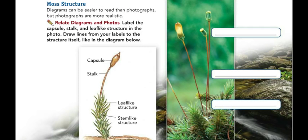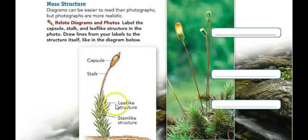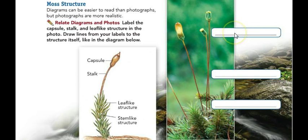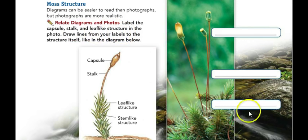On page 91 in your book, go ahead and label these three boxes. You're labeling parts of the moss. Look at the diagram on the left, then label these boxes and draw a line from the label to the structure. You're labeling the capsule, the stalk, and the leaf-like structure in the three blanks.